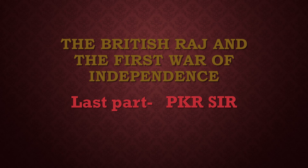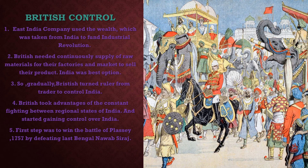Today I am going to upload this last video from this chapter: The British Raj and the First War of Independence. The East India Company of England used the wealth taken from India to fund the industrial revolution happening in Britain. British also needed a steady supply of raw material to produce cotton cloth, and a market. India was the best option, so gradually British turned from traders to rulers.